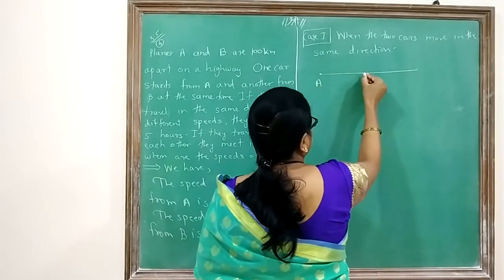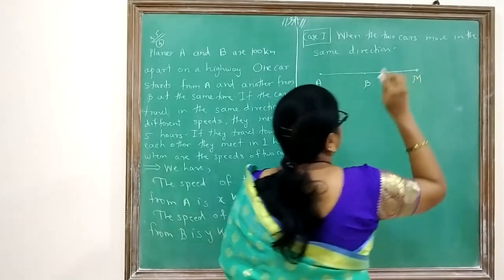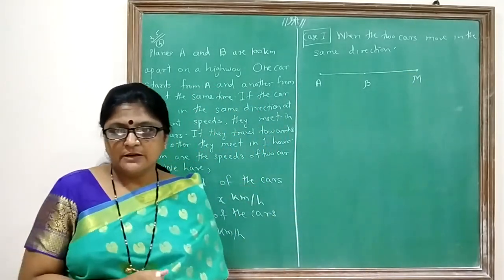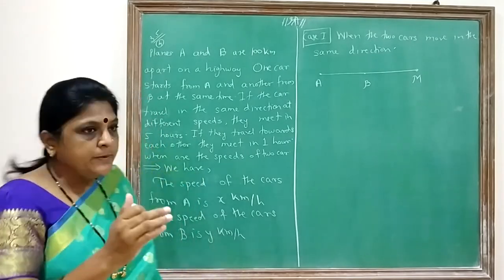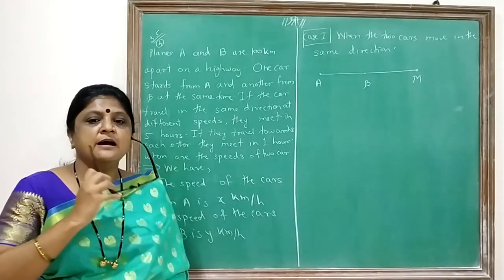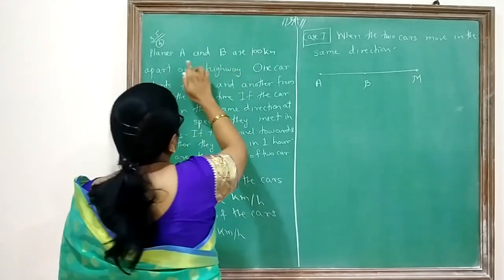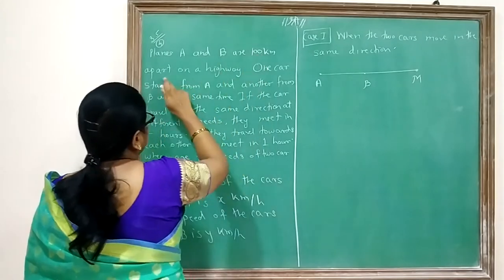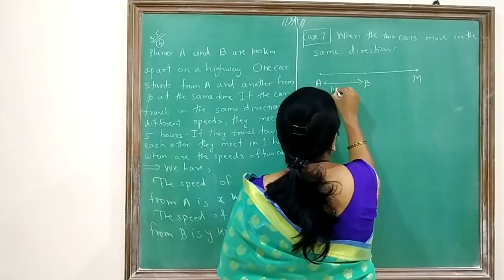In the diagram, this is car A, this is car B, and the meeting point is M. The distance from A to B is 100 km, because points A and B are 100 km apart on a highway.